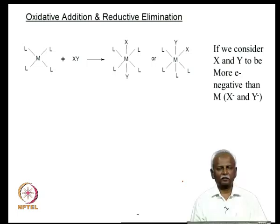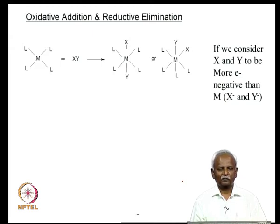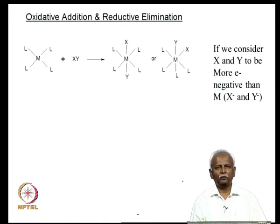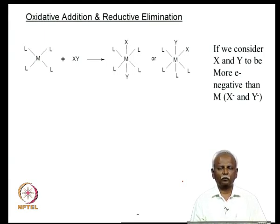The majority of reactions that have been mechanistically studied are those where you have a D8 metal complex. Many D8 metal complexes have a square planar geometry, so that is what we will take as an example. If you have a diatomic molecule XY and add it to this D8 metal complex, you can isolate an octahedrally coordinated complex with a D6 electron count. The question is: what has happened to the oxidation state of the metal?